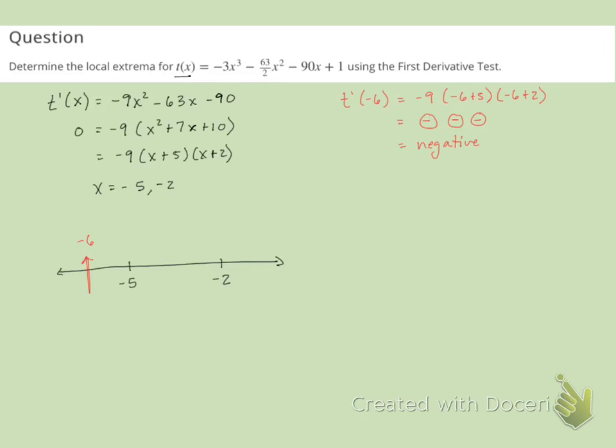Now let's test a number between negative five and two. I'll pick negative three. And we're going to do the same thing. So we're going to substitute in negative three. And again, we only care whether this is positive or negative. So negative nine, always negative. Negative three plus five is a positive value. Negative three plus two is a negative value. Two negatives and a positive will give us a positive output. Which means that we have a positive number here. We have a negative output over here.